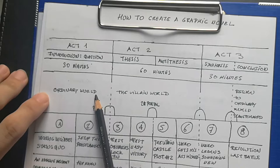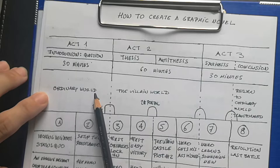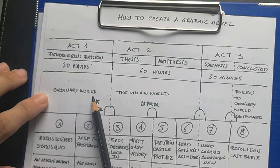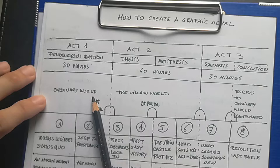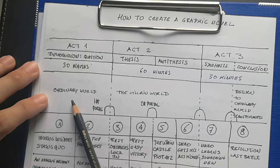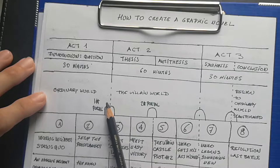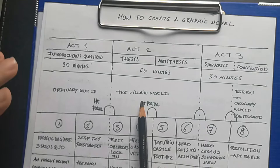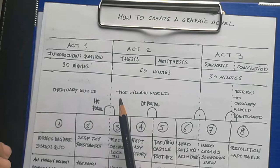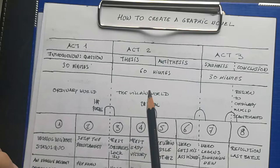The first act mostly takes place in the ordinary world — the most common world for your character. If your character is an astronaut, their ordinary world is space. If a diver, it's the ocean. If a common person in a city, it's that city. Then something happens in Act 1 that moves the main character to another world — not necessarily a geographic dimension, but a world of new difficulty.